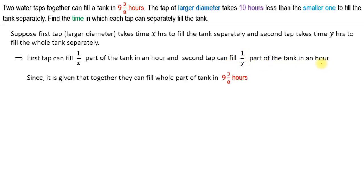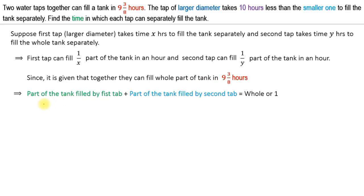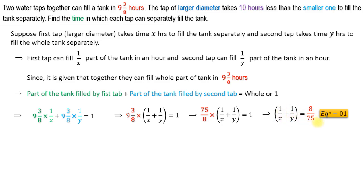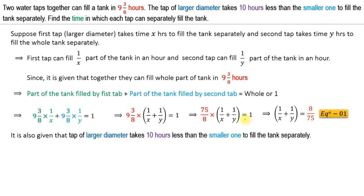Since it is given that together they can fill the whole tank in nine and three-eighths hours, the part filled by the first tap plus the part filled by the second tap in that time equals one. This gives nine and three-eighths times (1/X + 1/Y) = 1. Converting nine and three-eighths to 75/8, we get (75/8) × (1/X + 1/Y) = 1, which implies 1/X + 1/Y = 8/75. Let us call this equation one.